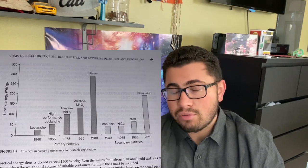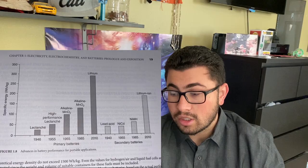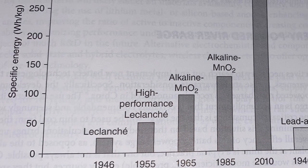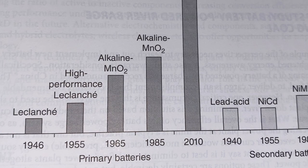Examples of primary batteries include the Leclanché battery, which was used for a long time, and the alkaline battery, which is this one right here. There are different generations of alkaline batteries — newer ones have more performance. It really has to do with the chemistry and makeup of the cell.